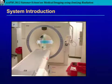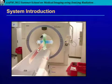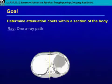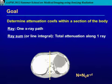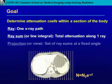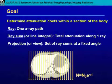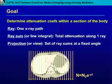Here's our coordinate system: the XY plane is our scan plane, and the Z axis runs along the longitudinal direction — the direction of the patient or the table. We need to define a few things. Our goal is to determine attenuation coefficients within a section of the body. A ray is one X-ray path, a ray sum or line integral is the total attenuation along one ray, and a projection or view is a set of ray sums at a fixed angle.